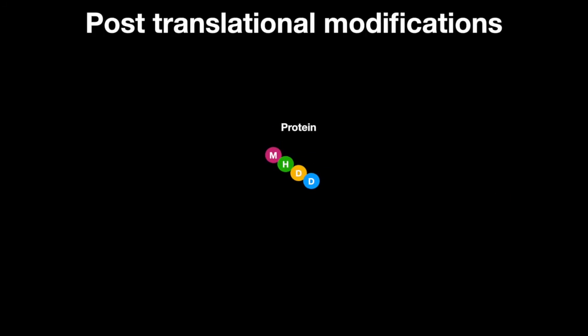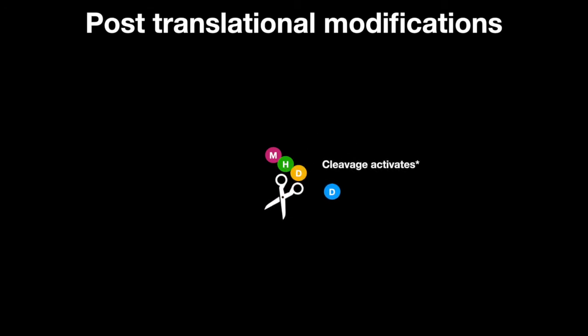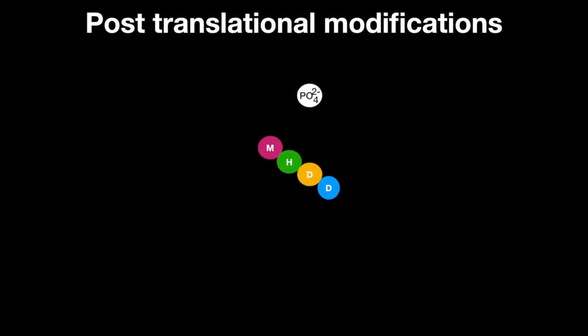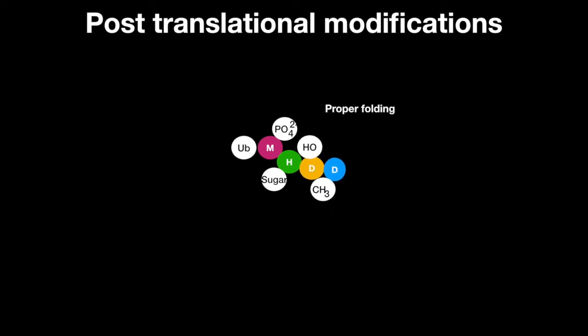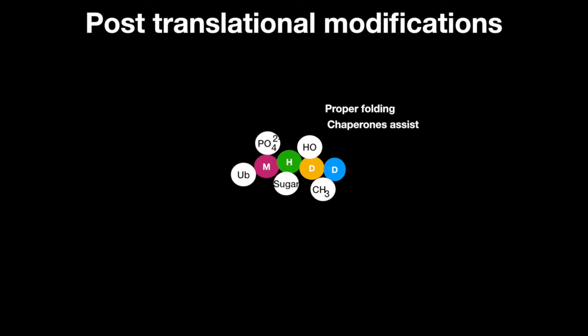After translation is complete, some proteins like trypsinogen need to be cleaved at the N or C terminus to be converted into their active form. Another modification involves covalent modifications. Phosphorylation, glycosylation, hydroxylation, methylation, acetylation, and ubiquitination are all common covalent modifications. Proteins also need to fold properly to achieve full activity, and chaperone proteins can assist with this process.